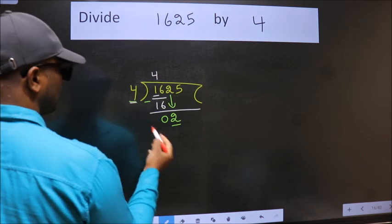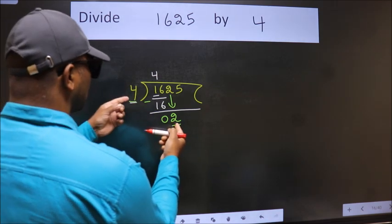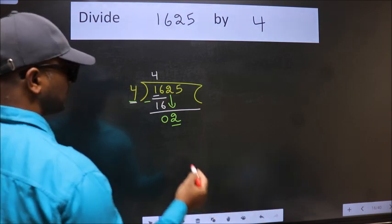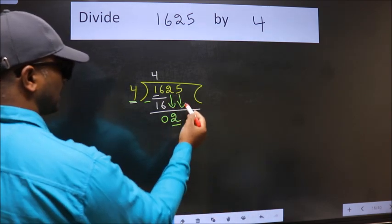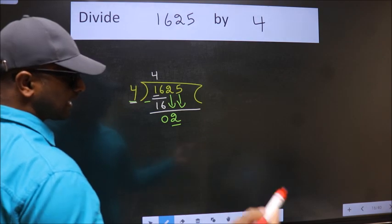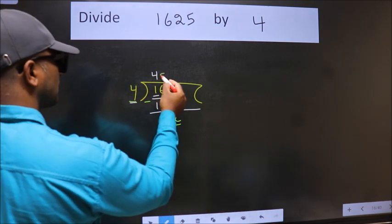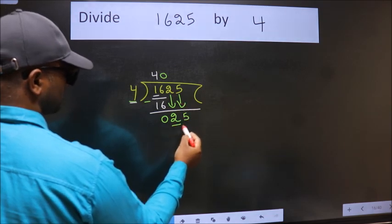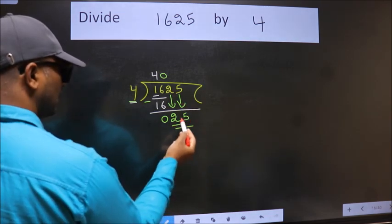2 is smaller than 4, so we should bring down the second number. And the rule to bring down the second number is put 0 here, then only we can bring this number down. So 25.